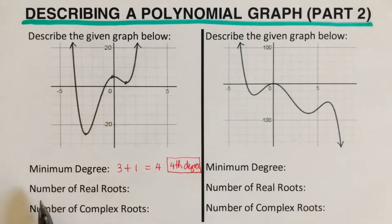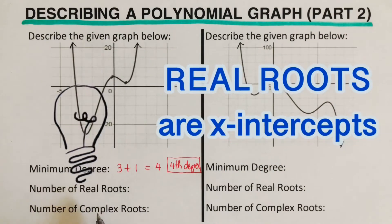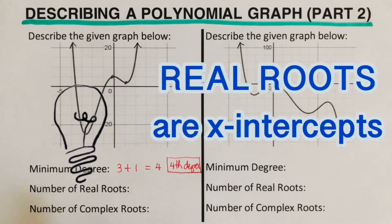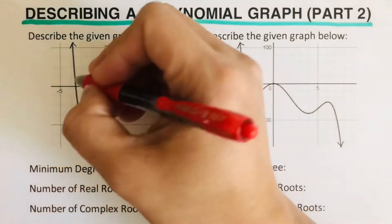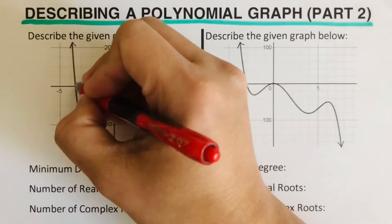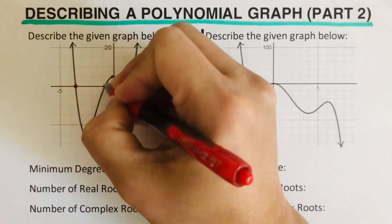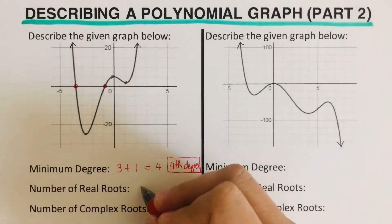By definition, real roots are roots located on the x-intercept — they represent the x-intercepts. In this case, we have two x-intercepts, so there are two real roots.